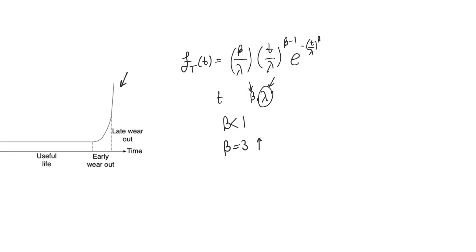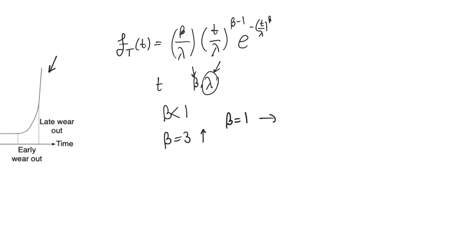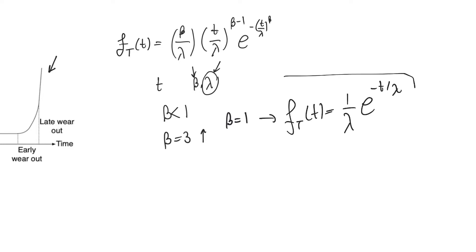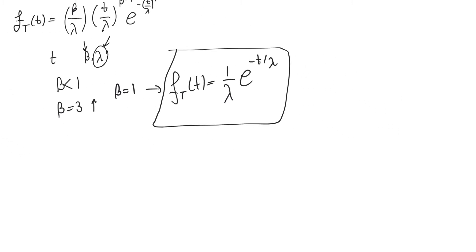Around beta equals 1 is where useful life is. With beta equal to 1, the probability density function reduces to an exponential distribution: (1/λ) · e^(−t/λ). This is the PDF in the useful life stage. If you take the expected value of this PDF, it is actually equal to lambda. And since it is the expected value of a time variable, lambda has a unit of time.